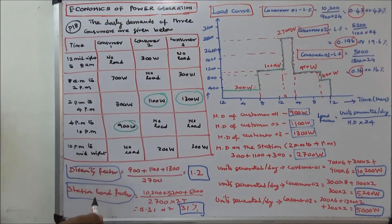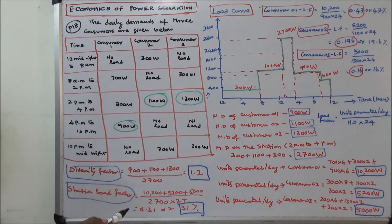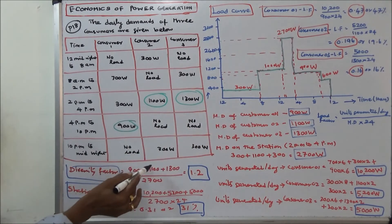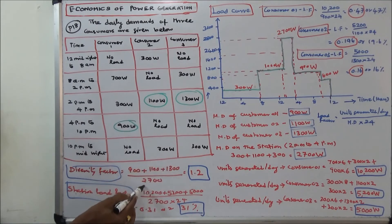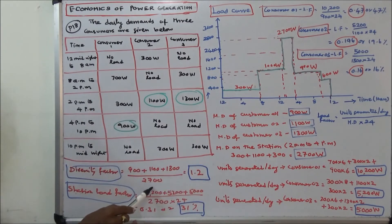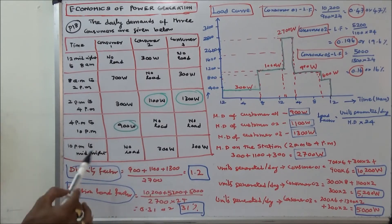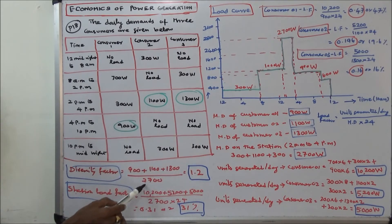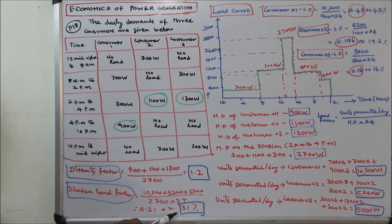Diversity factor equals sum of individual maximum demands divided by maximum demand of the station. So: 900 + 1100 + 1300 = 3300 divided by 2700 = 1.2. Station load factor equals total units generated per day divided by maximum demand of station times 24: (10,200 + 5,200 + 5,000) ÷ (2700×24) = 0.31 or 31%.